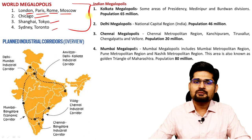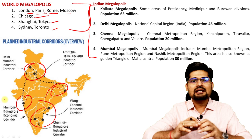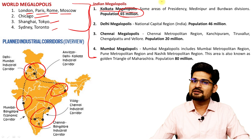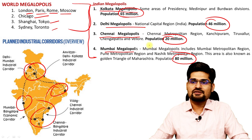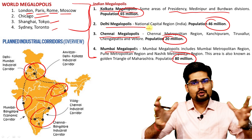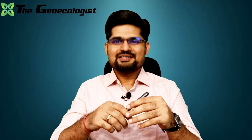World megalopolis examples include London, Paris, Rome, Moscow, Chicago, Shanghai, Sydney, Tokyo, and Toronto — the world cities. In India, the four major megalopolis regions are: Kolkata (65 million population), Delhi (more than 46 million), Chennai (more than 20 million), and Mumbai (more than 80 million). These megalopolis have combinations of nearby areas and huge urban coverage connecting the core city with surrounding regions.